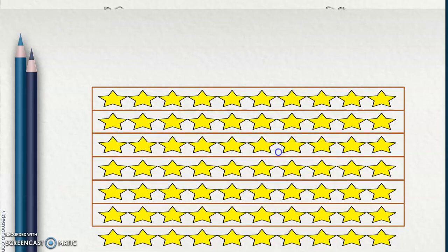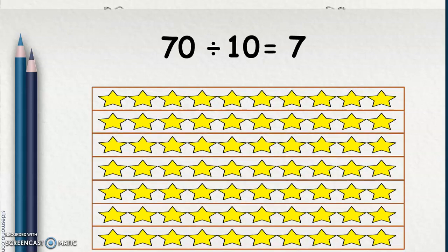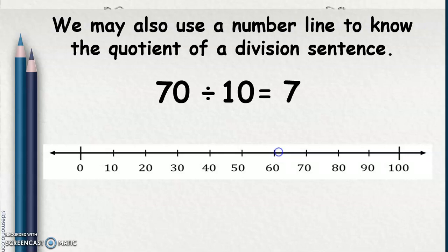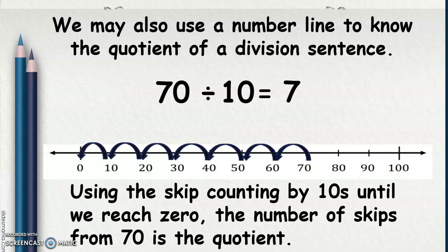We may also use a number line to know the quotient of a division sentence. 70 divided by 10 is 7. Coming from 70, we go to 60, 50, 40, 30, 20, 10, and 0. Using skip counting by 10 until we reach 0, the number of skips from 70 is the quotient.